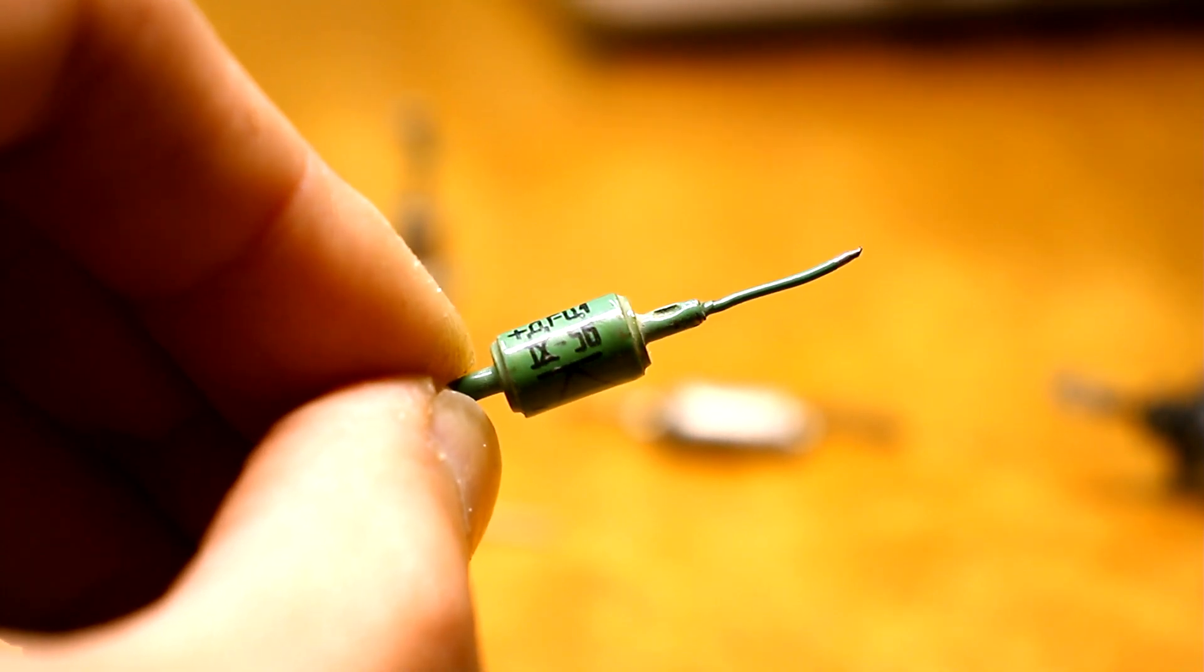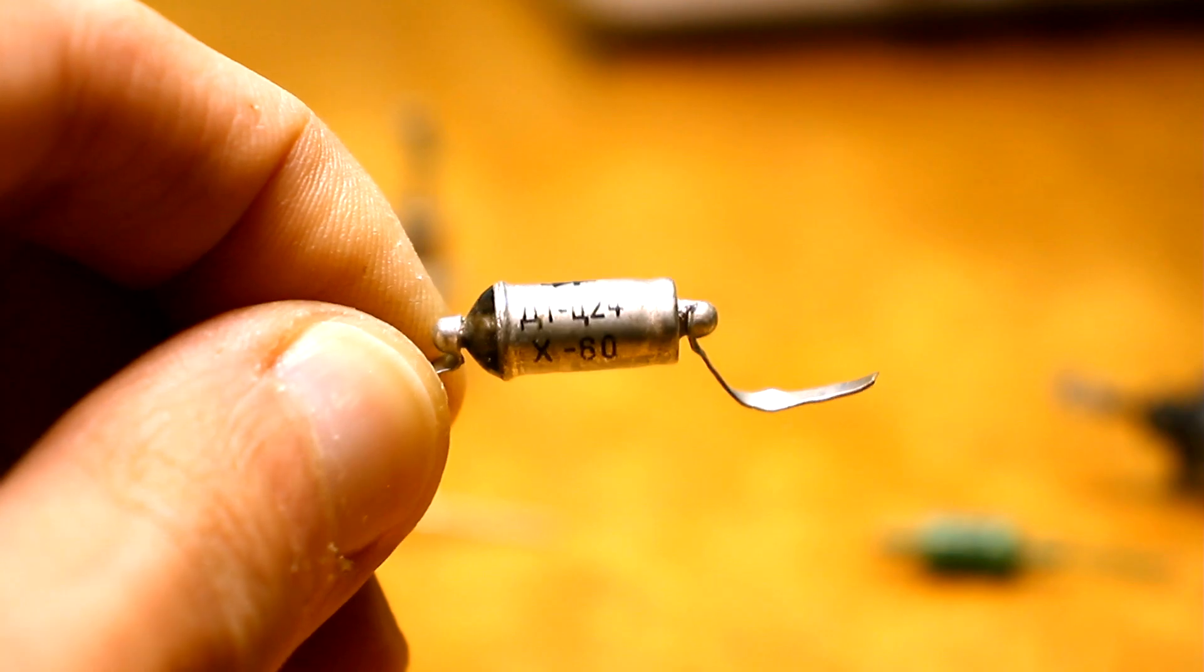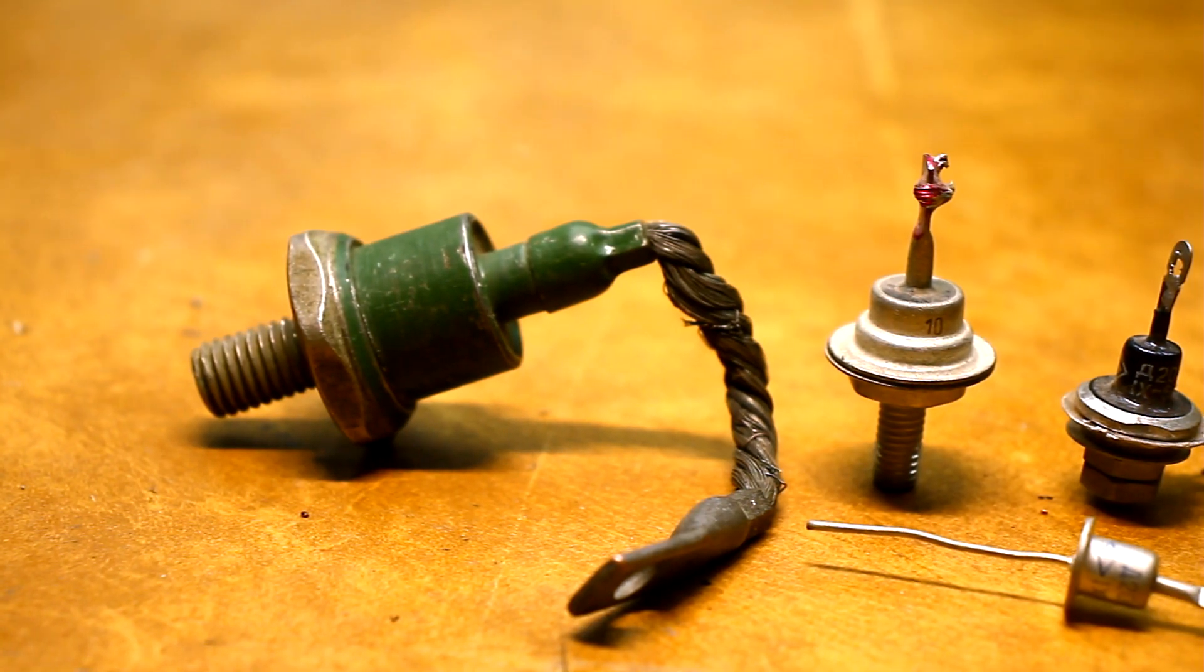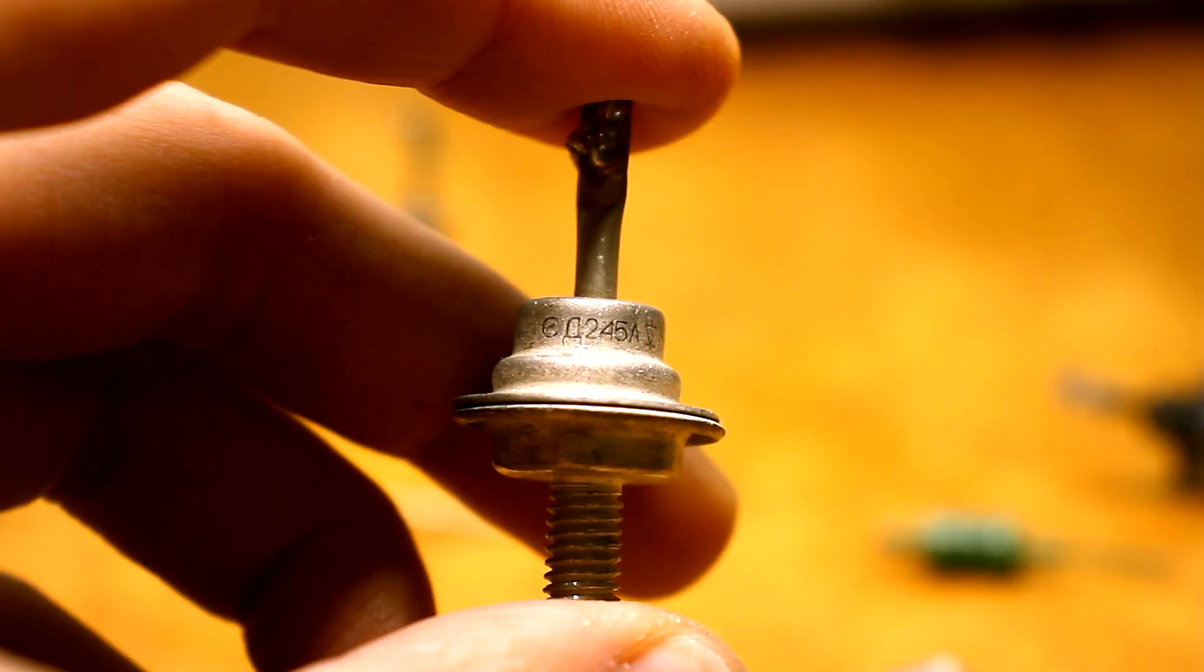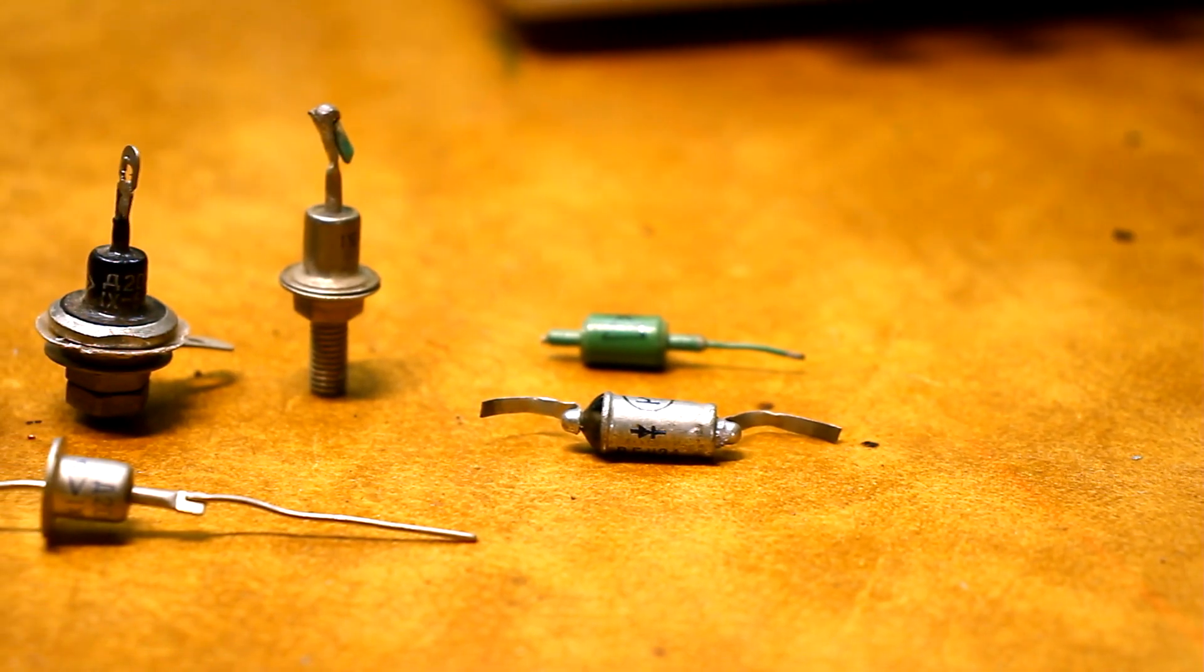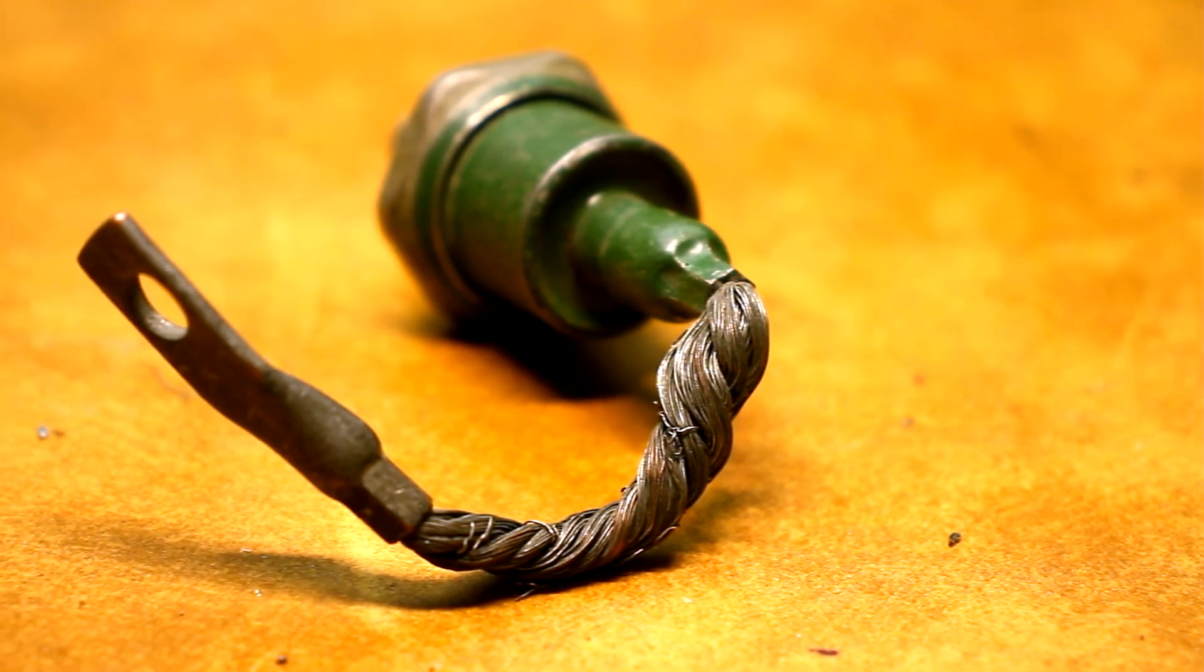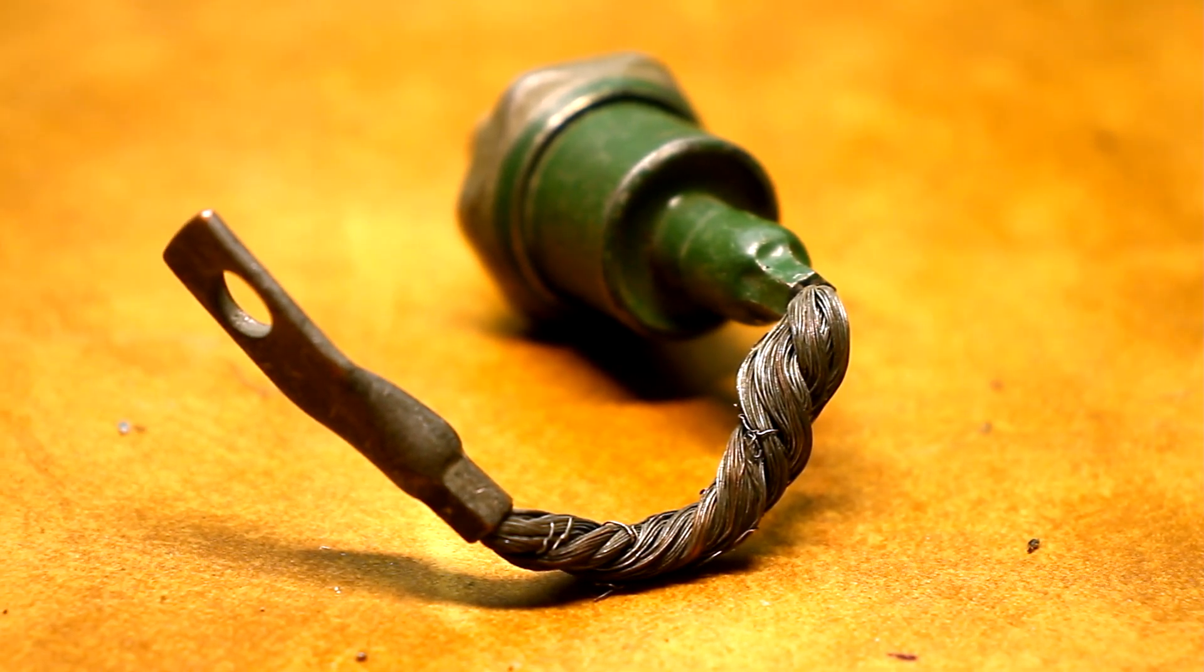The first rectifier diodes were invented before the first transistors. In addition to their direct purpose, that is, rectifying alternating current, diodes were used as a detector in receivers. The first diodes were made on the basis of germanium crystal. Now, they are completely replaced by silicon rectifier diodes.